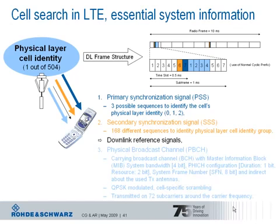The master information block also contains the system frame number, as well as the configuration of a specific downlink channel. Further, the UE gets the information about how many transmission antennas are used in that cell. This is all the UE knows after successful execution of the cell search and cell selection procedure.